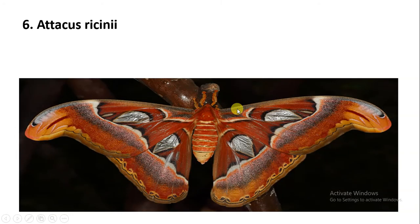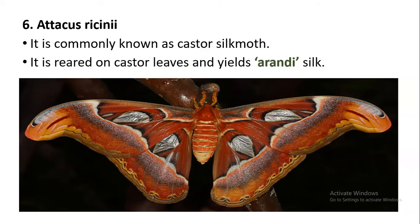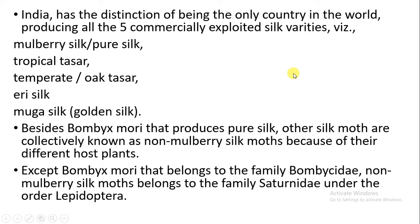The next species is Attacus ricini, also called the Castor silk moth, because the larval stage of this moth feeds on the leaves of the castor plant — called Arendi in Hindi. That is why it is also called the Arendi silk moth.